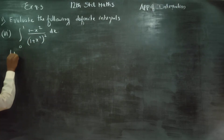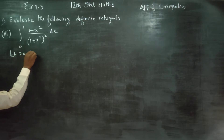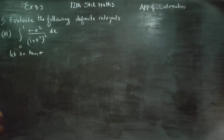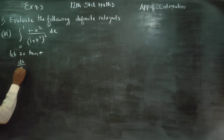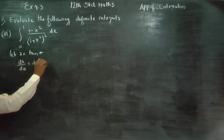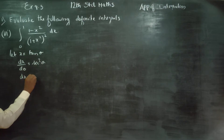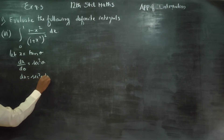I am going to start the substitution method. Let x is equal to tan theta. If you cross multiply, dx is equal to sec square theta d theta.